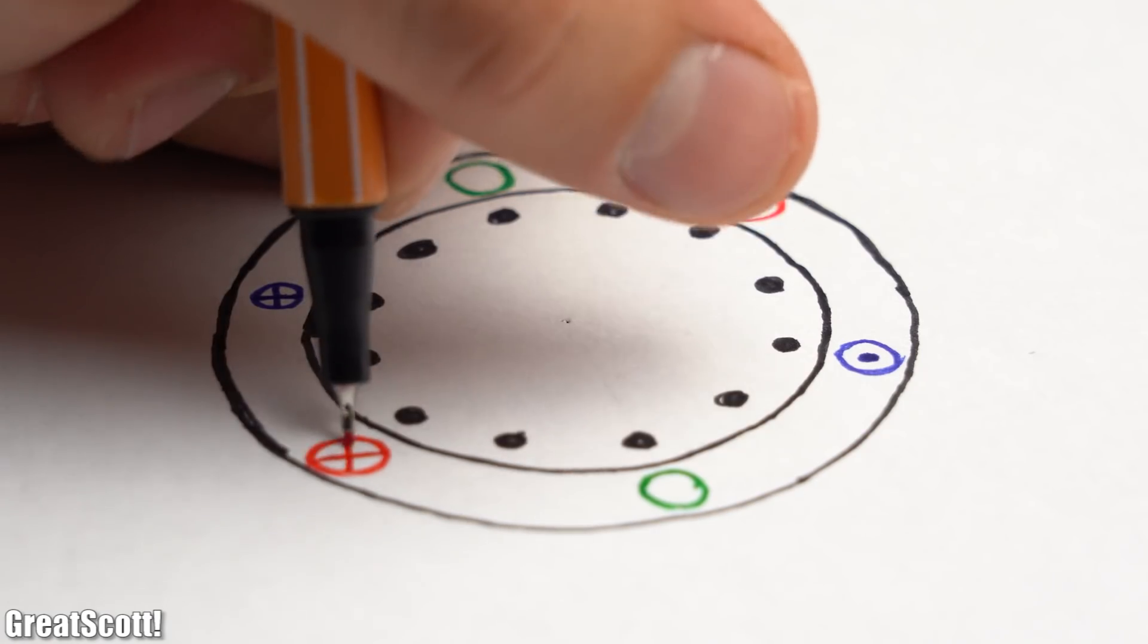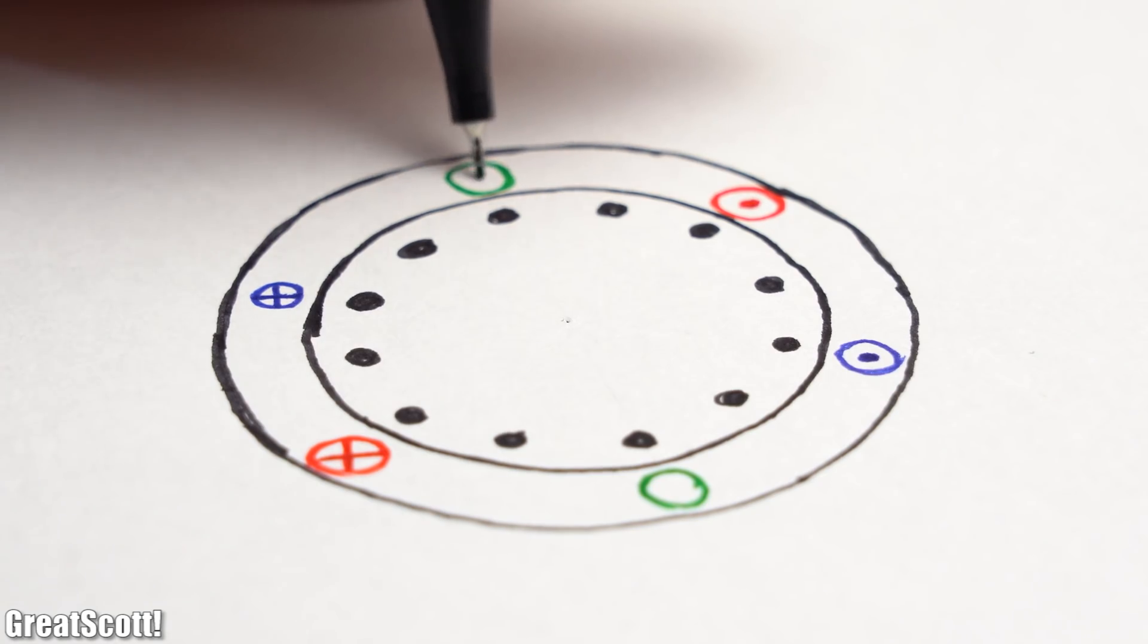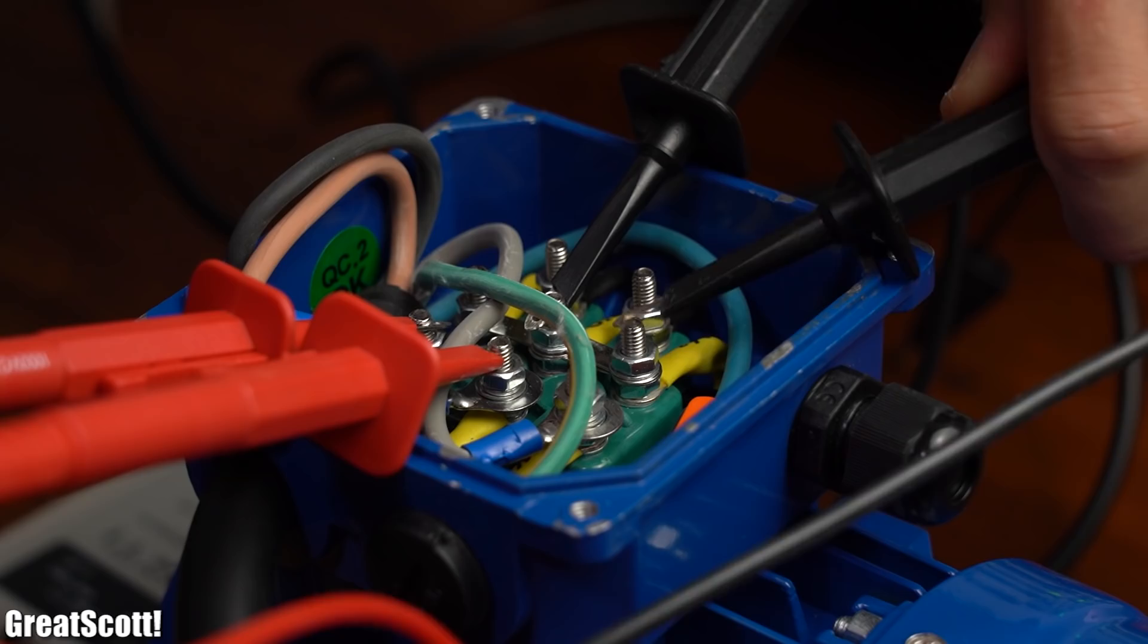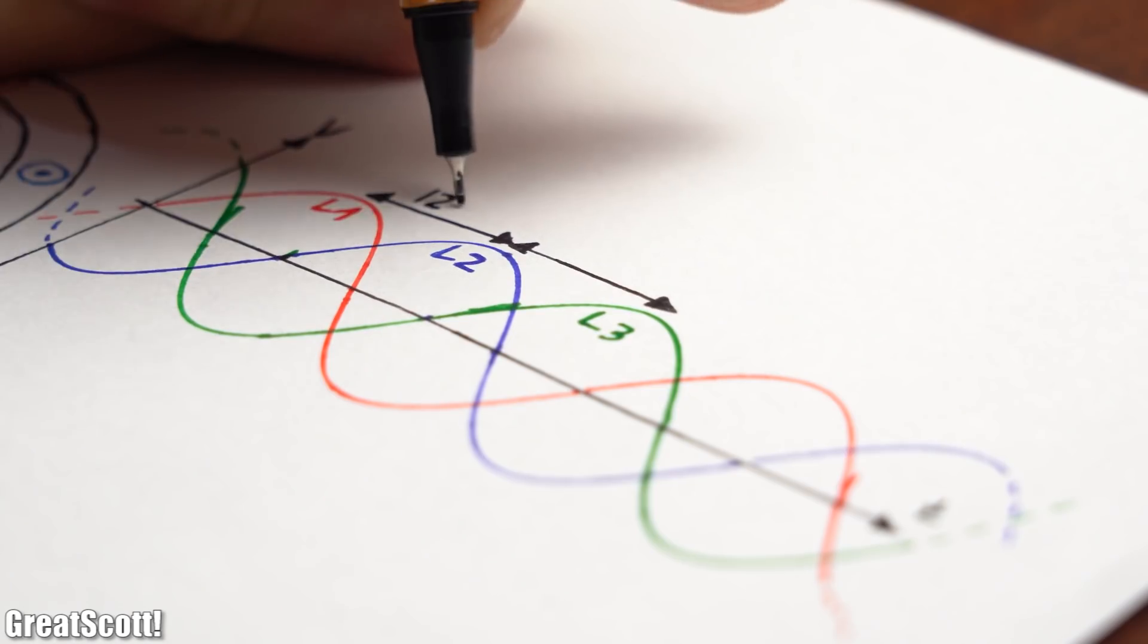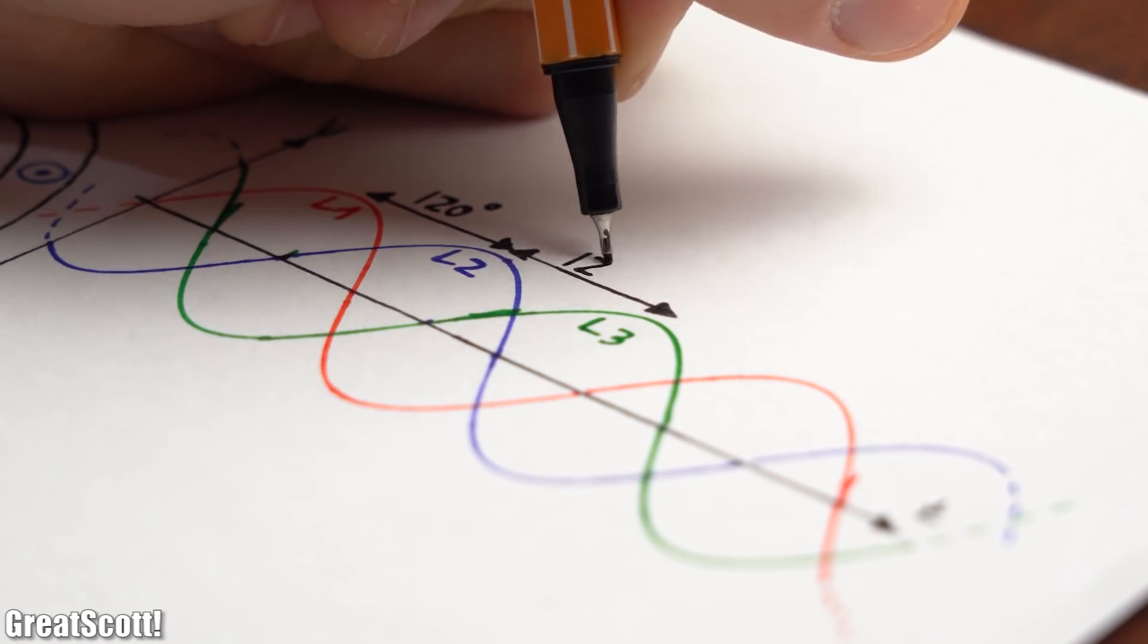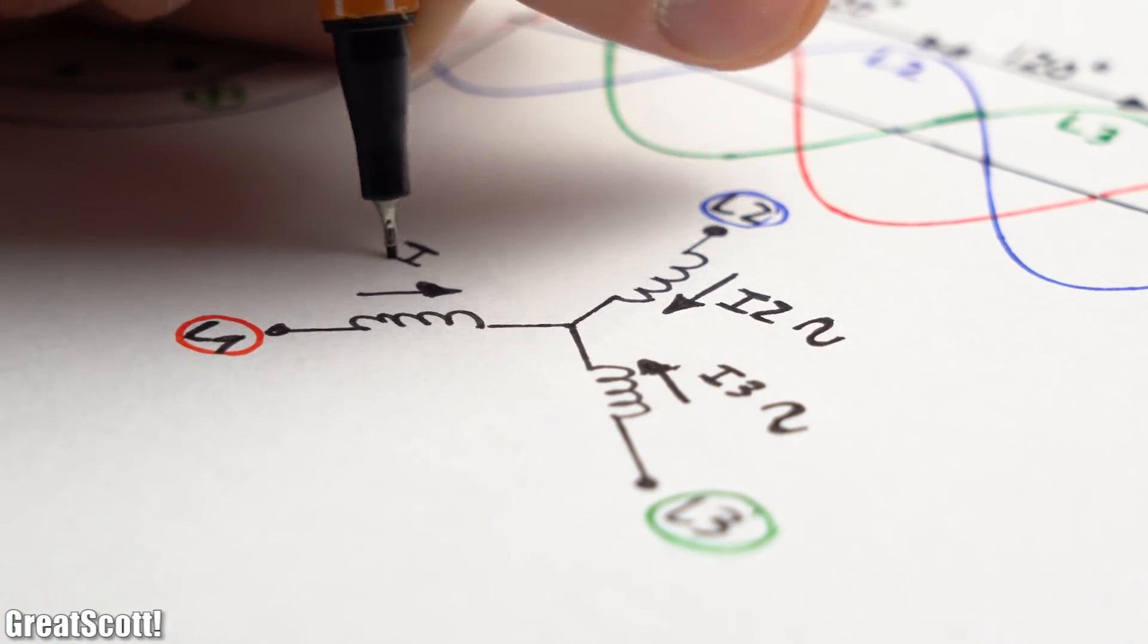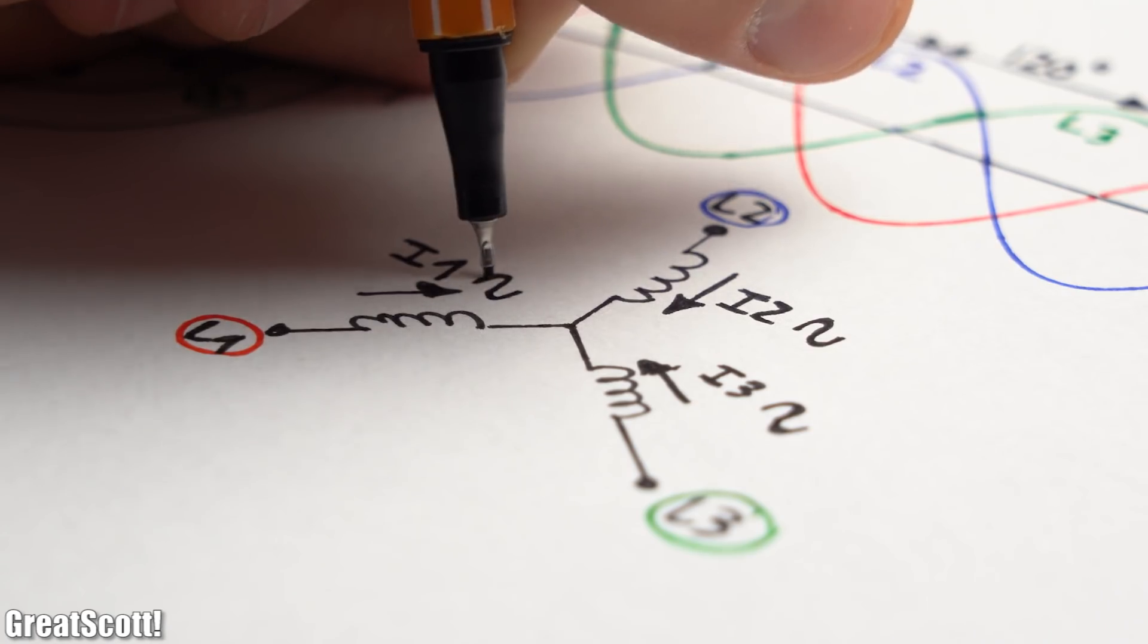Well for that let's imagine the stator looks like this. And we got one coil pair for each phase positioned inside the stator like this. If we look at the voltages across our coil pairs we can see that we are dealing with three sine waves which are positioned 120 degrees out of phase to one another. That means since there are sine voltages applied to our coils sine currents are also flowing.